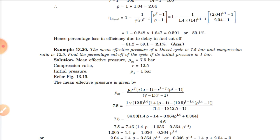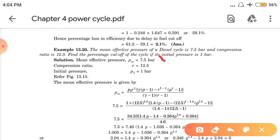Another numerical: Mean effective pressure of a diesel cycle is 7.5 bar and compression ratio is 12.5. Find the percentage cutoff of the cycle if its initial pressure is 1 bar. So mean effective pressure is given as 7.5 bar, compression ratio R is 12.5, and initial pressure P1 is 1 bar. We need to find the cutoff.